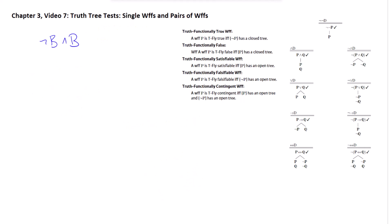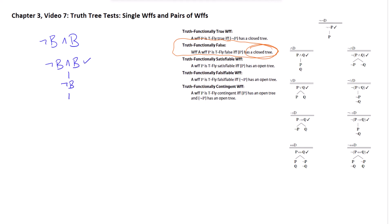As a quick example, take this formula, which you'll recognize is going to be truth functionally false. Since we suspect it's truth functionally false, what we should do is test the formula itself and expect it to close. We put that formula in the trunk of a tree, decompose it, and it immediately closes. So the formula itself cannot be true; therefore, it is truth functionally false. We have no further work to do.